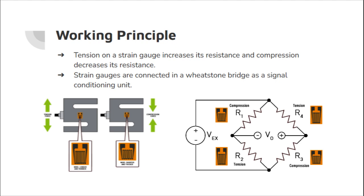So here we have a full wheatstone bridge with 4 different strain gauges connected to it. We can also use a half wheatstone bridge with 2 strain gauges but a full wheatstone bridge is less prone to errors.